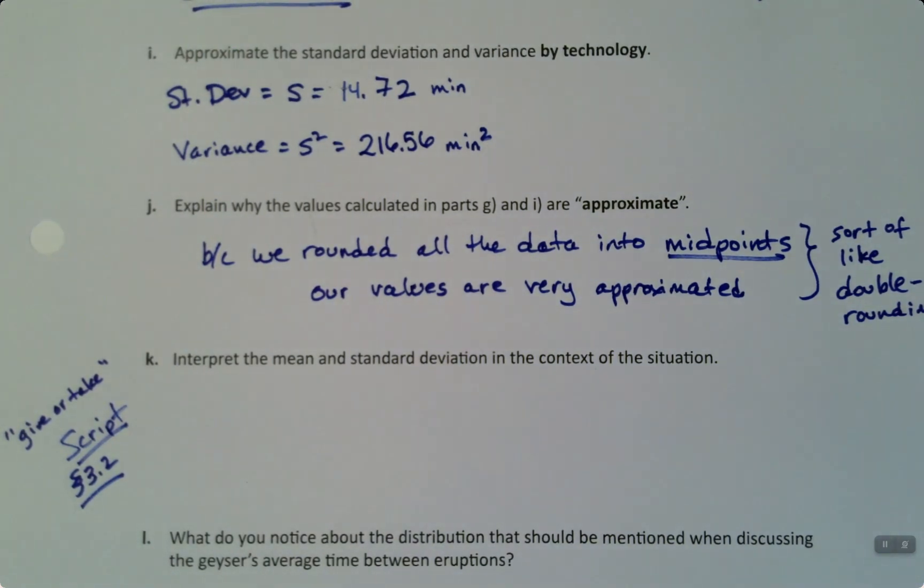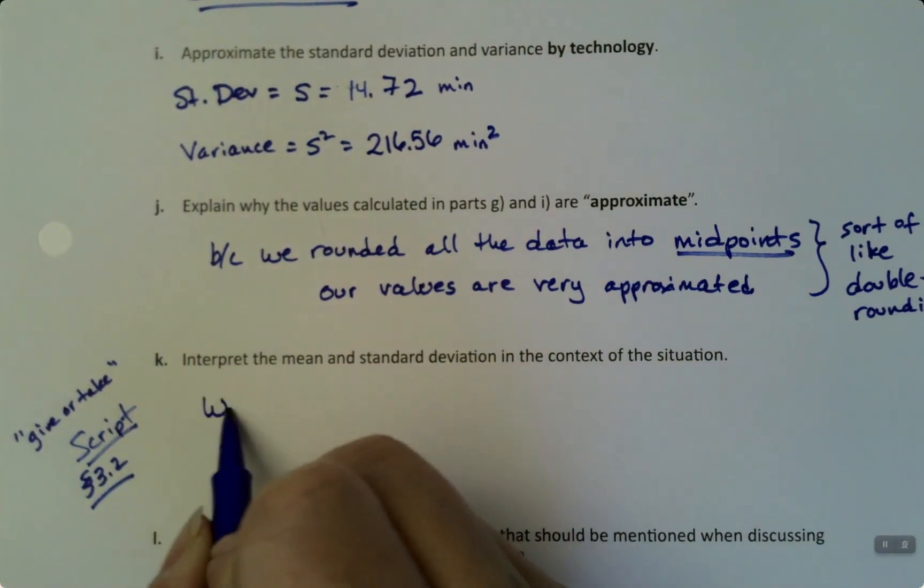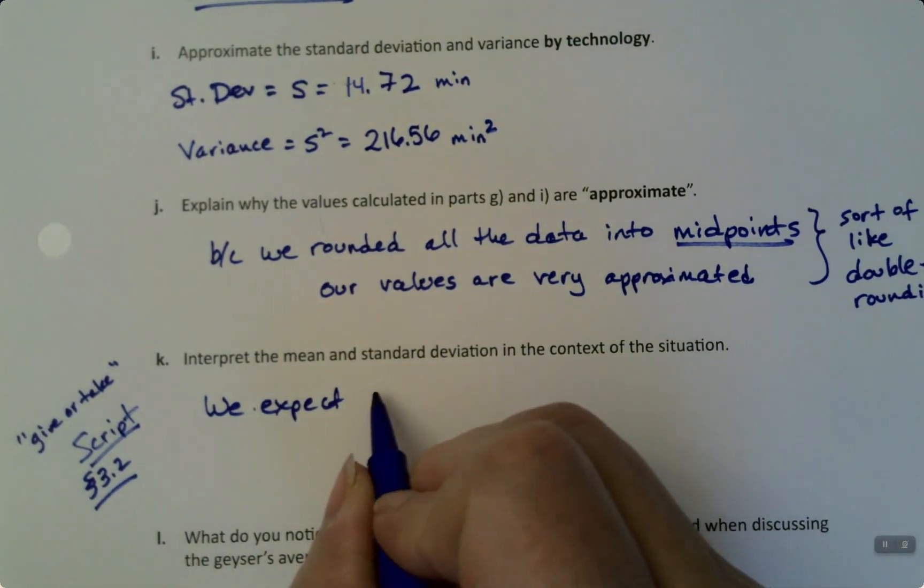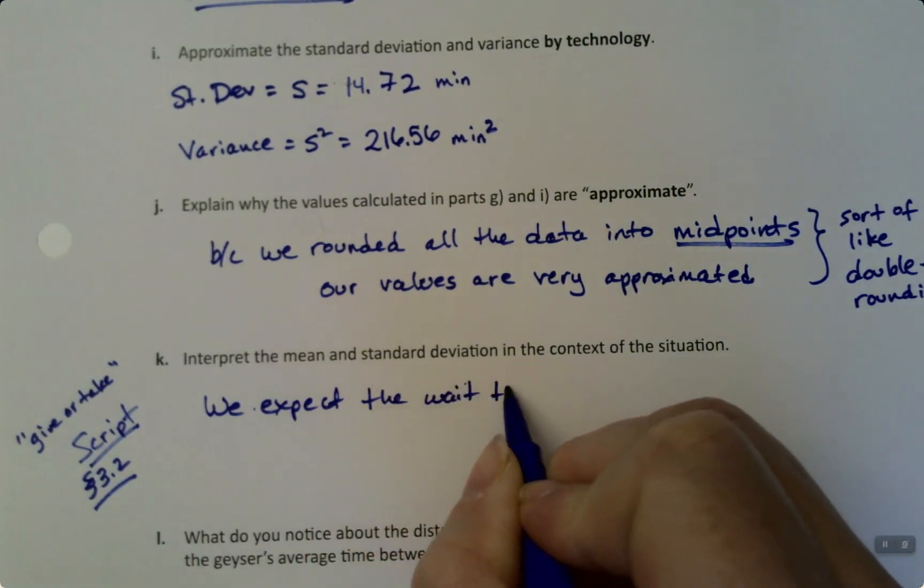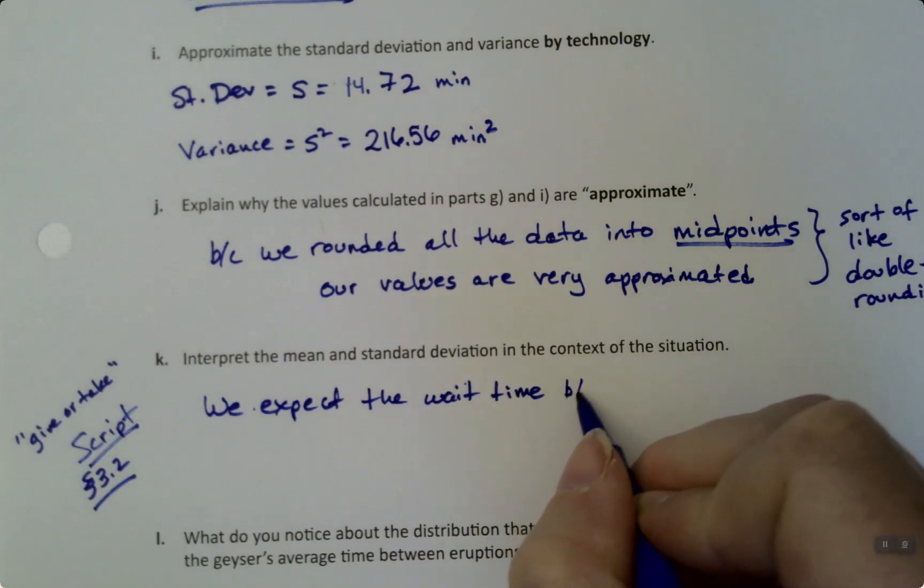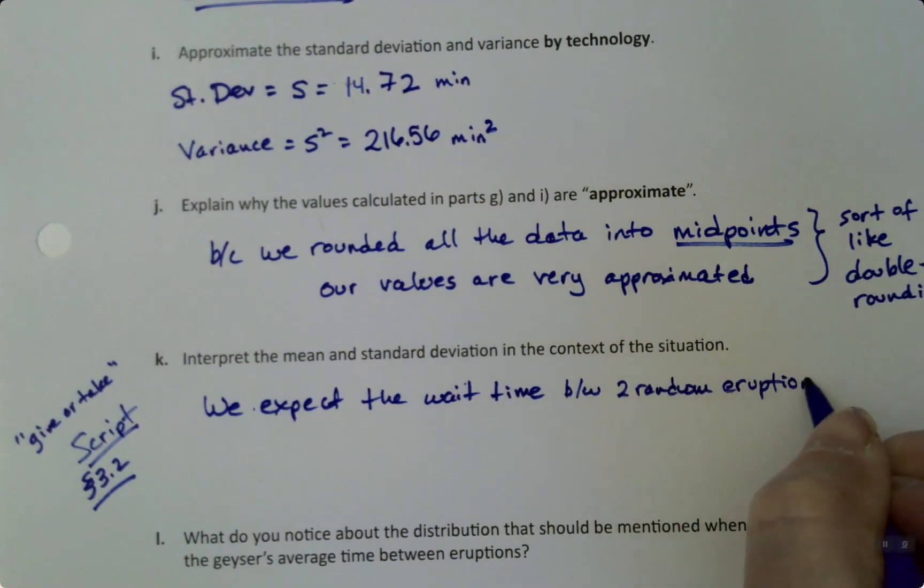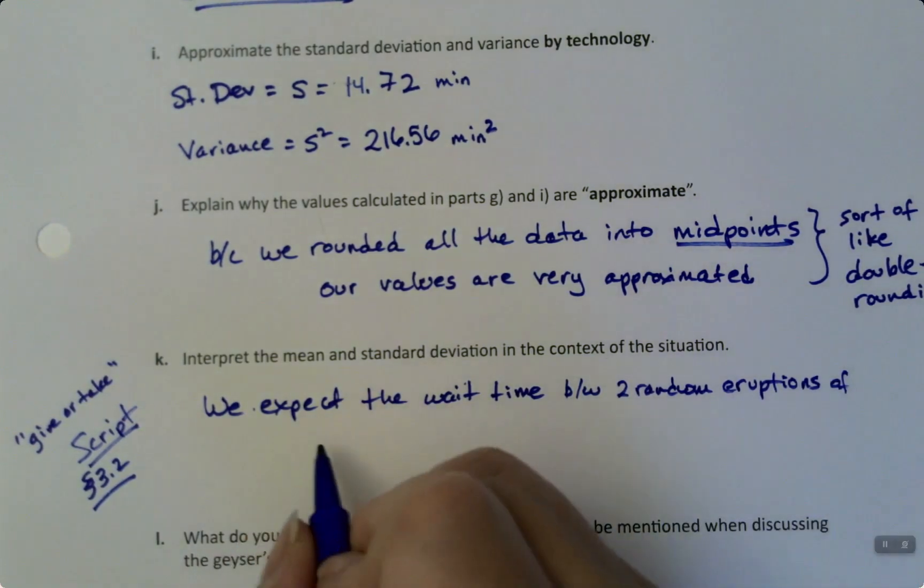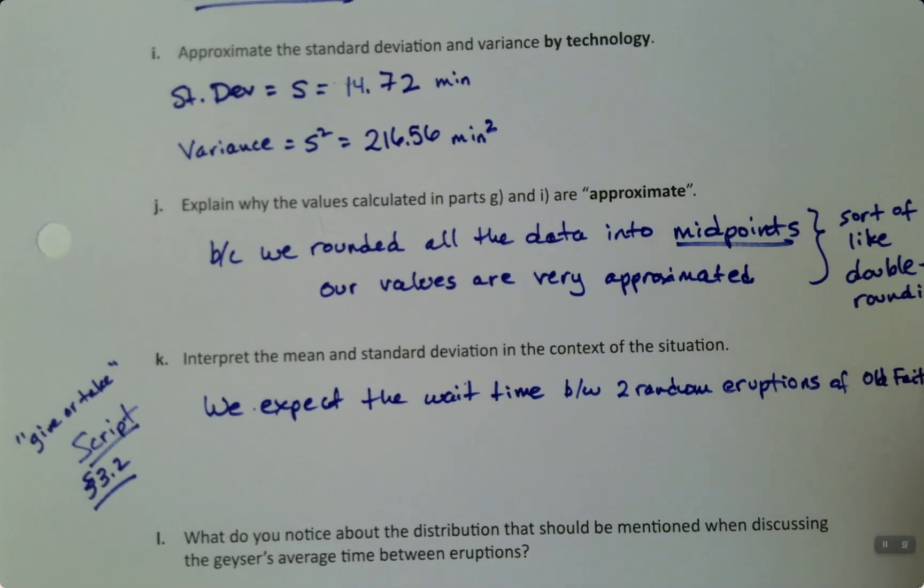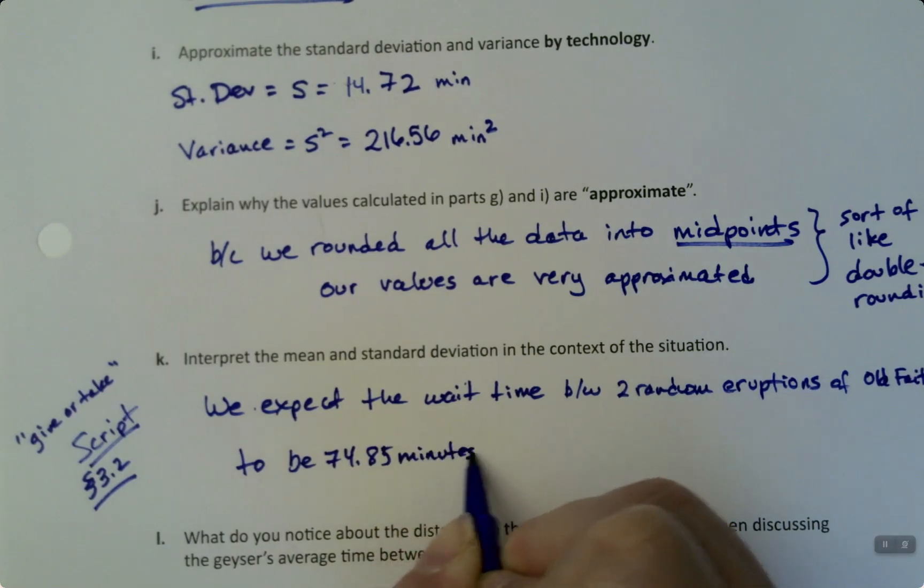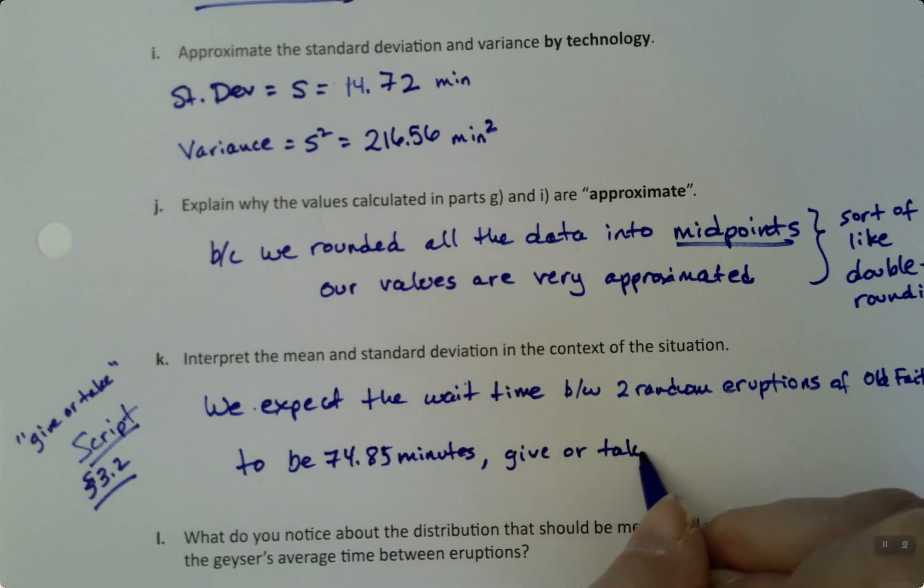Okay, so we expect the wait times between eruptions. So let's write this. So it starts off, we expect the wait times, or I guess the wait time between two random eruptions of Old Faithful. I'm running out of space. Old Faithful. I'm going to fit it in here. Faithful. To be 74.85 minutes, give or take 14.72 minutes.